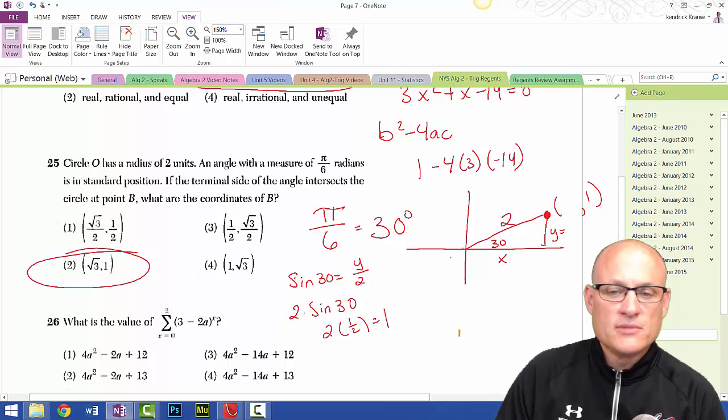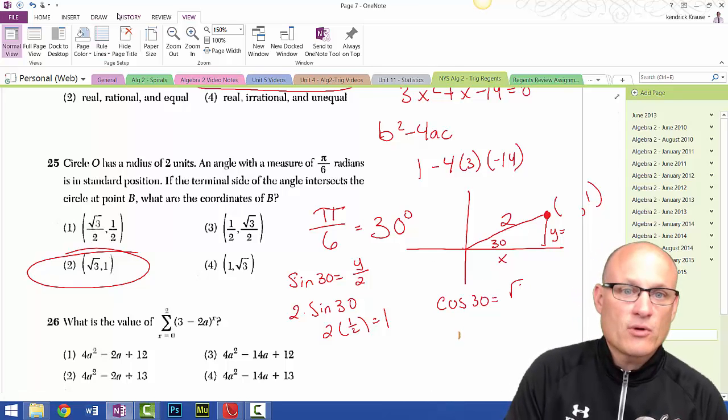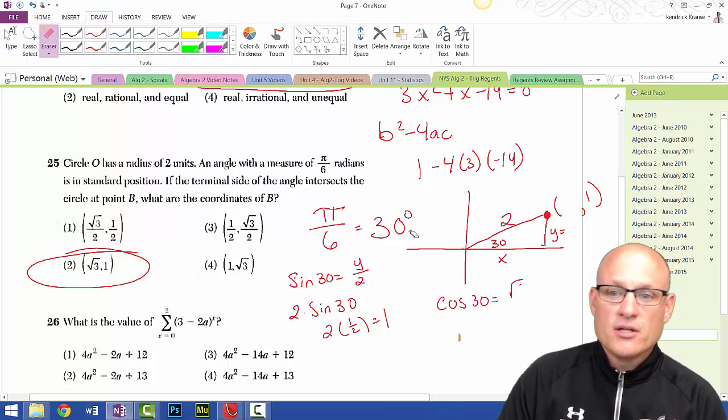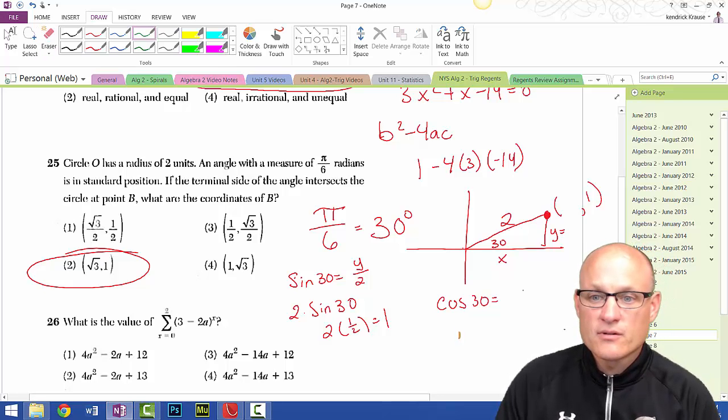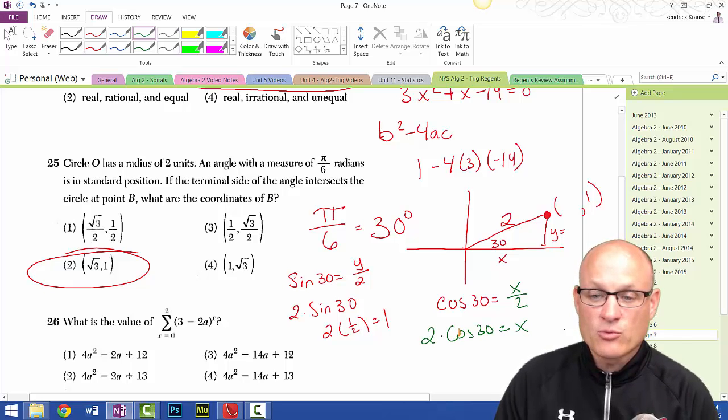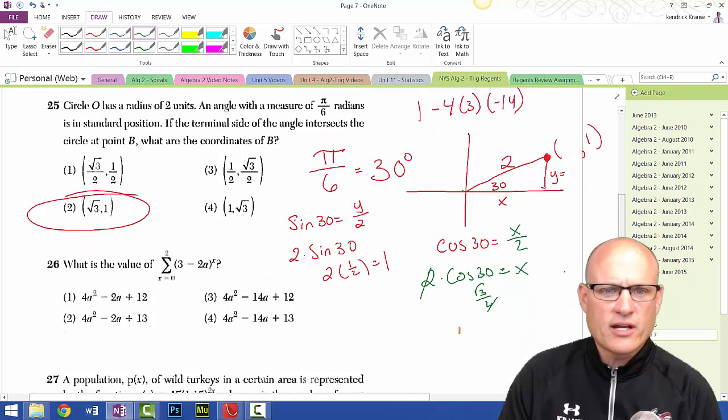Well, the sine of 30 is a half. So this would be 2 times 1 and a half, which is 1. So y is 1. So my y value here is 1. Now I'll do the cosine of 30 is equal to x over 2, or 2 times cosine of 30 is equal to x. Cosine of 30 is radical 3 over 2. So those cancel and x is radical 3. So that's that answer.